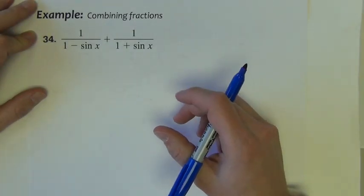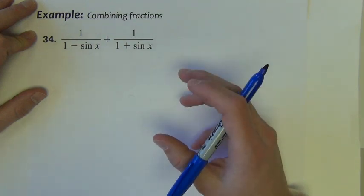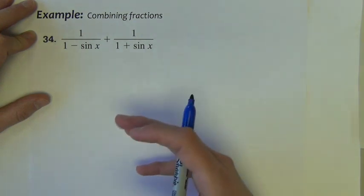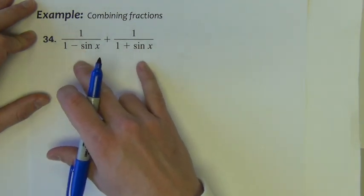In this next example, I'd like to show you one of probably the most well-used necessary strategies to solve these trig identities, and that is how do we combine two fractions with unlike denominators?